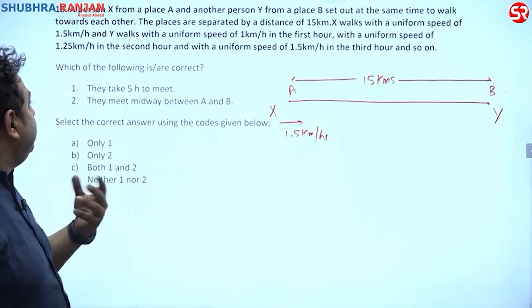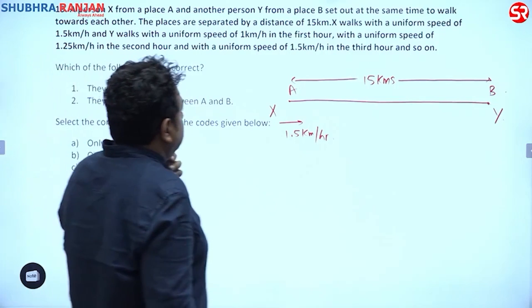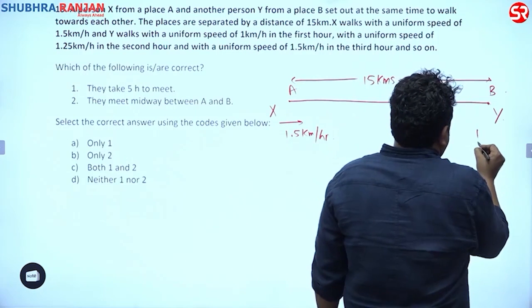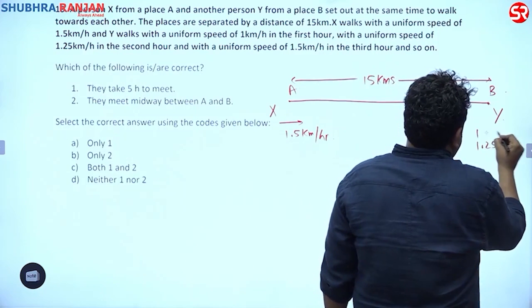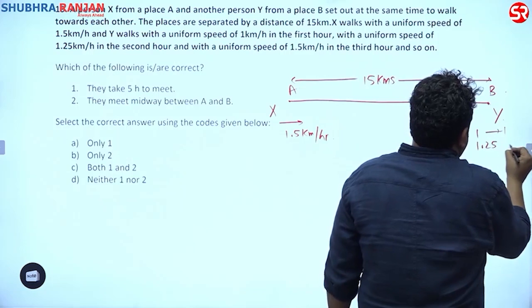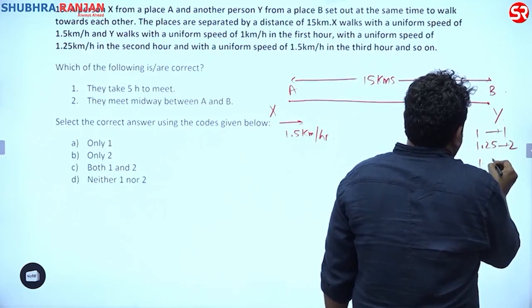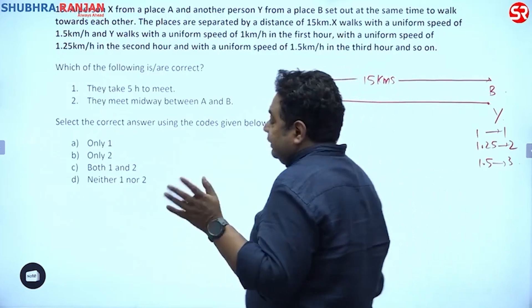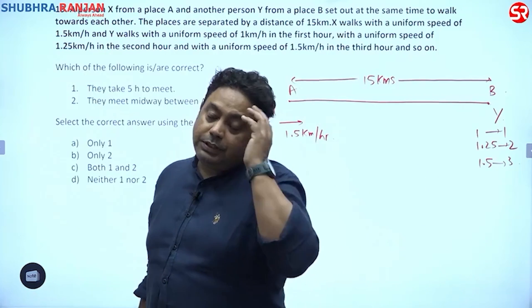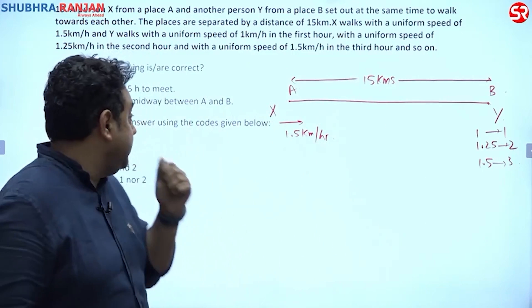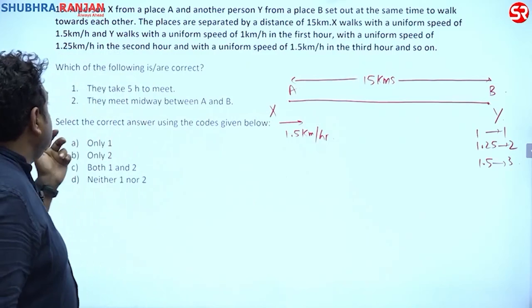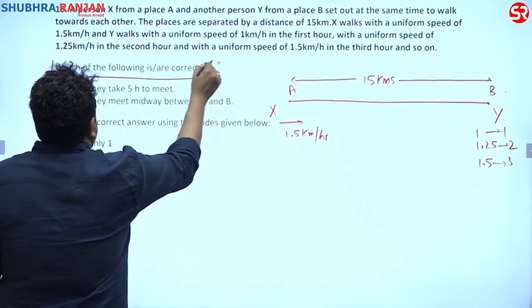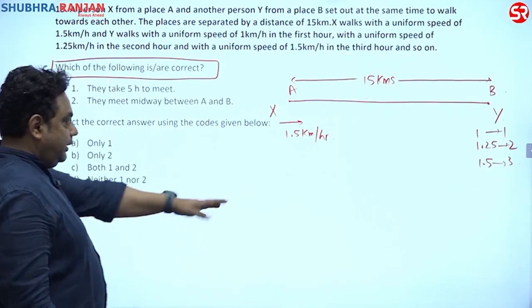Y walks with increasing speed: 1 km/h in the first hour, 1.25 km/h in the second hour, 1.5 km/h in the third hour, and so on. The question asks whether they take five hours to meet each other.